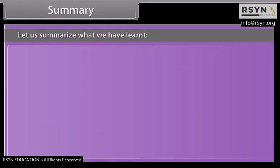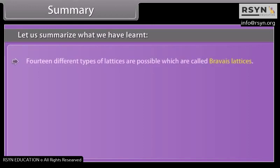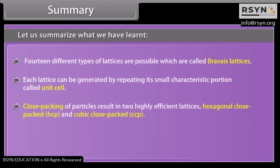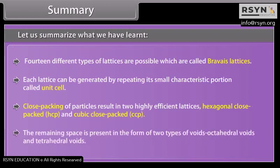In summary: 14 different types of lattices are possible, called Bravais lattices. Each lattice can be generated by repeating its small characteristic portion called a unit cell. Close packing of particles results in two highly efficient lattices — hexagonal close-packed (HCP) and cubic close-packed (CCP). The remaining space is present in the form of two types of voids: octahedral voids and tetrahedral voids.